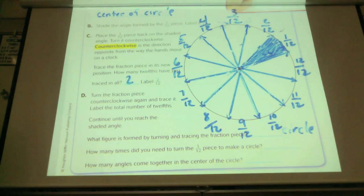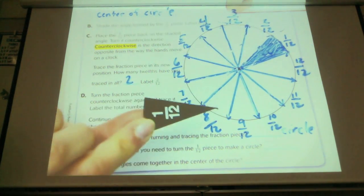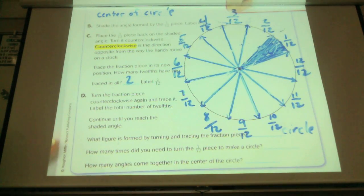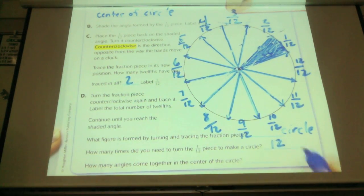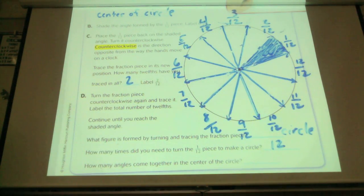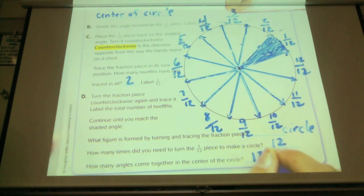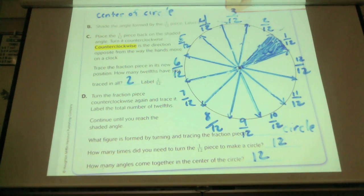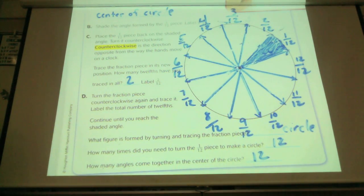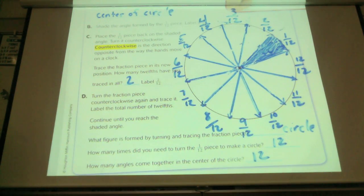How many times did we have to trace this piece to get all the way around? Twelve times. How many angles did I create? Twelve. So if we take a circle and divide it into twelfths, it makes twelve pieces — like twelve pieces of pie, or twelve pieces of a big giant cookie. And it makes twelve angles.